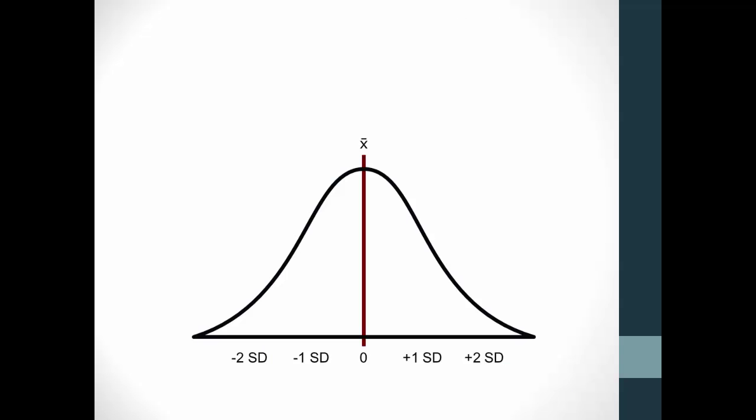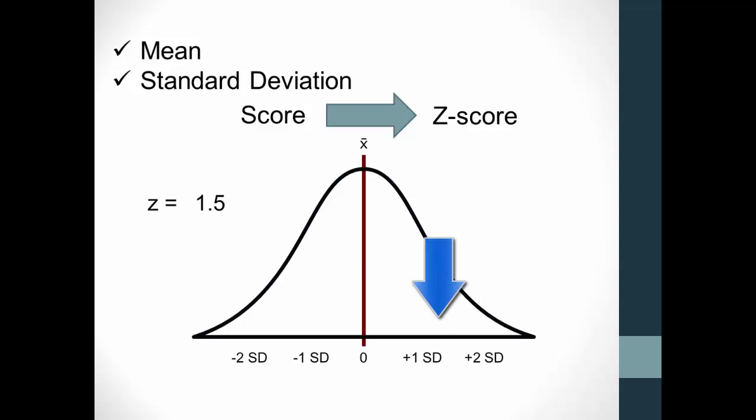So let's get back to what we said earlier, that z-scores measure the distance between a particular score and the mean. That means that as long as we have the mean of a distribution and the standard deviation, we can convert any score to a z-score, meaning we can figure out how many standard deviations a particular score is away from the mean. A z-score of 1.5 is 1.5 standard deviations away from the mean, above the mean. A z-score of negative 0.5 is actually half a standard deviation away from the mean, below the mean. And a z-score of 0 is actually located at the mean.